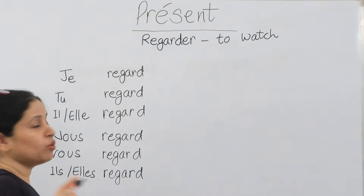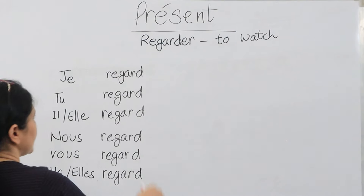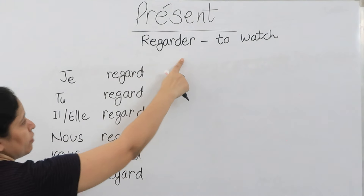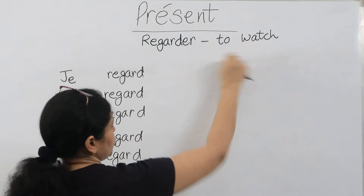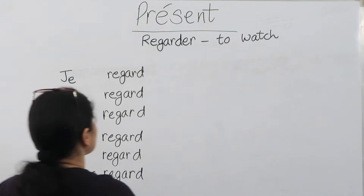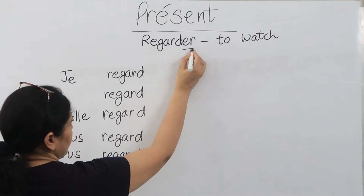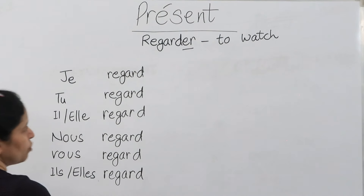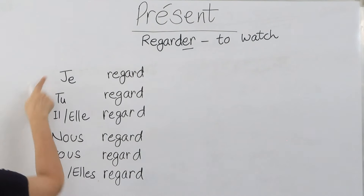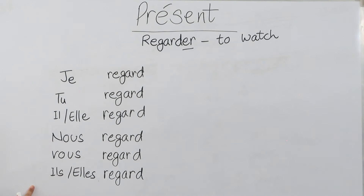Now we'll see one more verb from the same group: 'regarder,' which means 'to watch' or 'to look at.' It is also an -er ending verb, so we'll follow the same steps. First, we'll write all the pronouns.